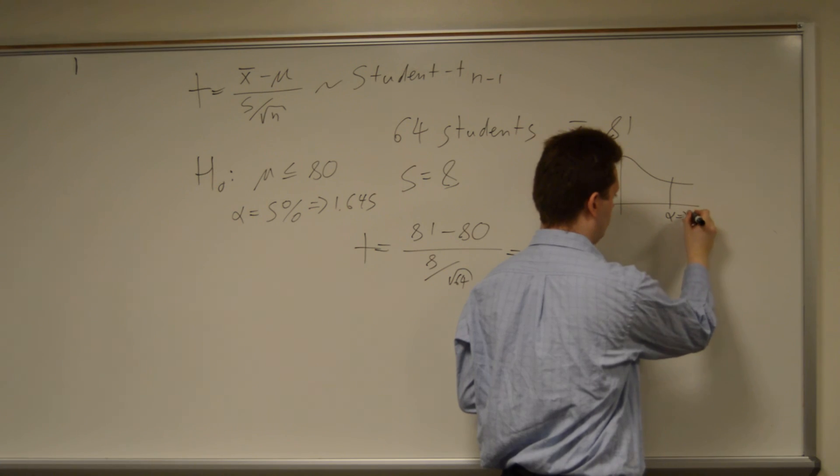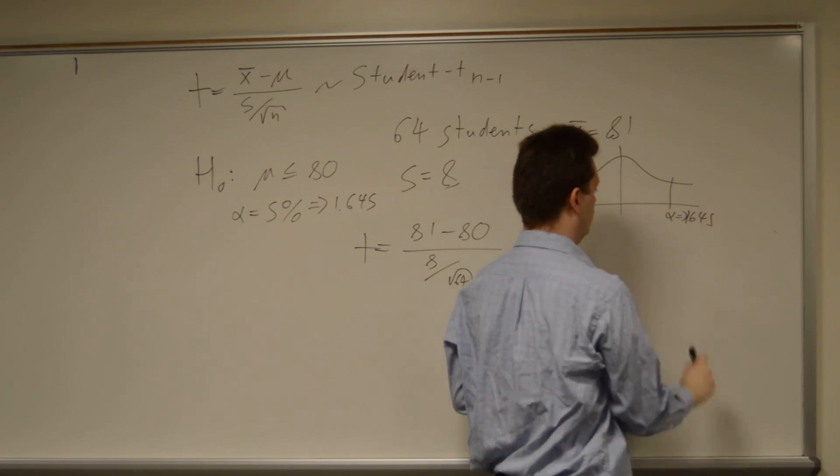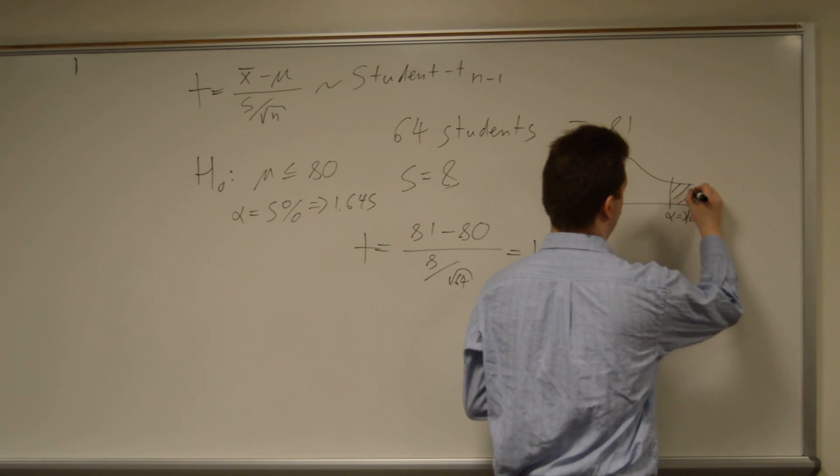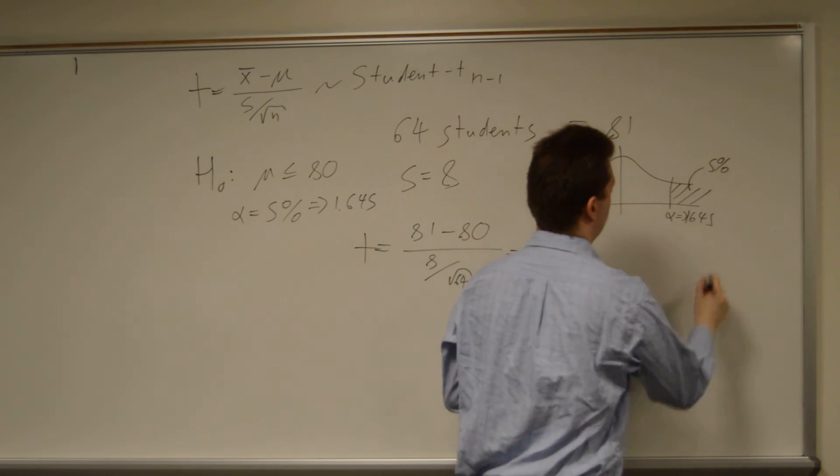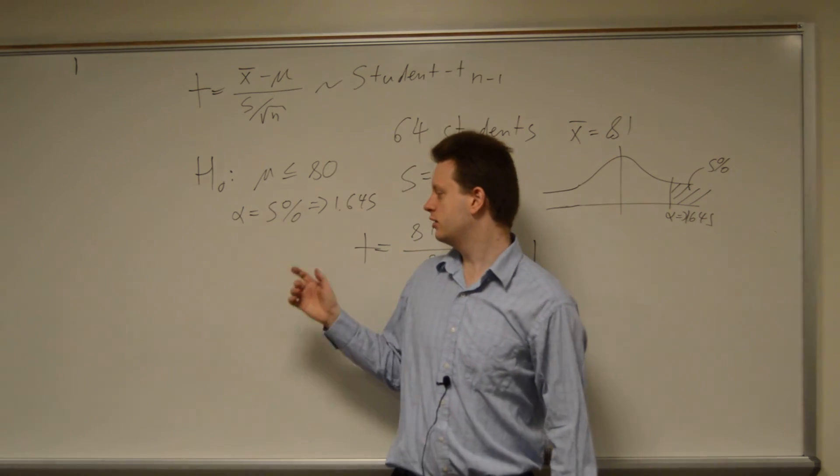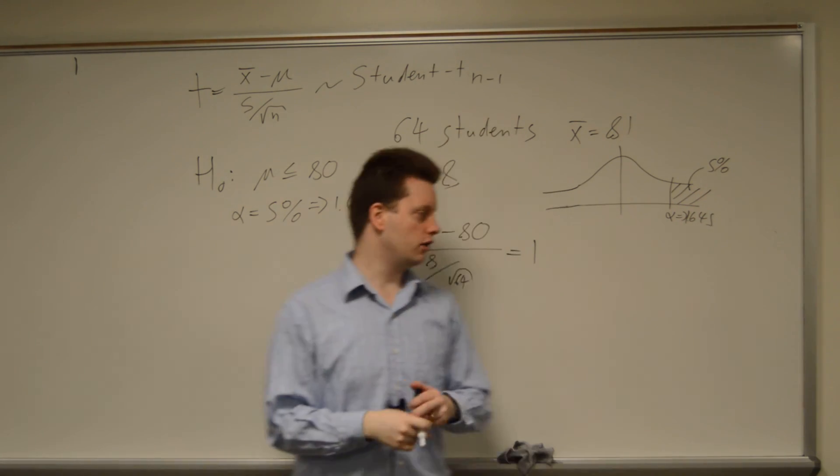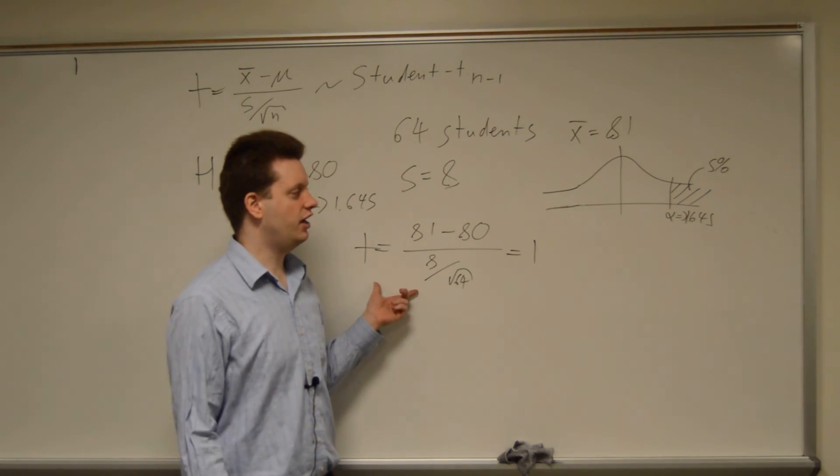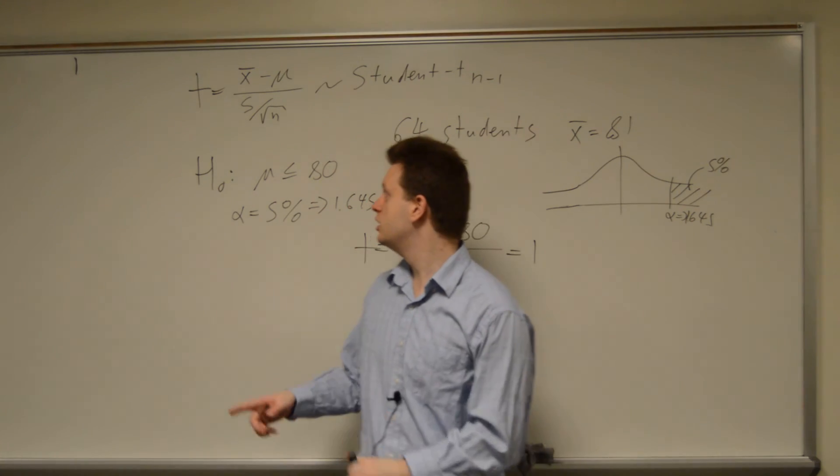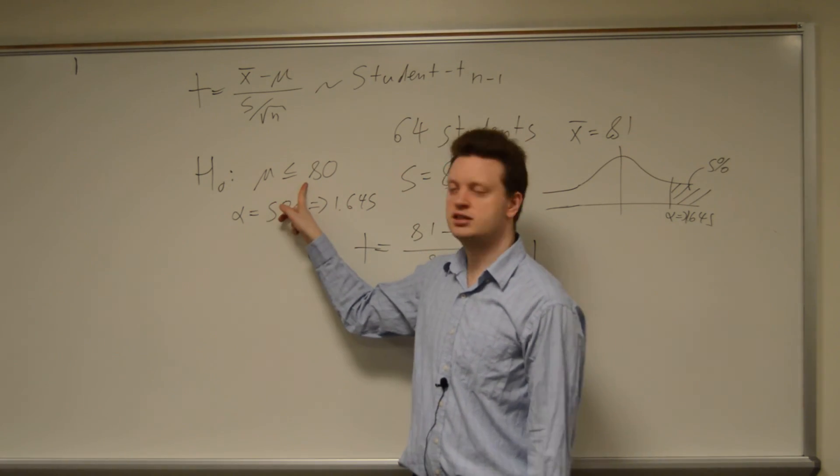And we want to look, this will be 5% of our density, this area in here. And if it turns out that our t-statistic, which we calculated here, gives us a value in this area, we would reject the hypothesis that this mu is less than or equal to 80.